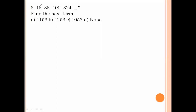For the sequence 16, 36, 324: this is 4 squared, 6 squared, 10 squared, 16 squared, 18 squared. The pattern is 6 plus 2 plus 2 squared plus 2 cubed plus 2 to the power 4 equals 16, and 34 squared equals 1156. Option number A is the right answer.